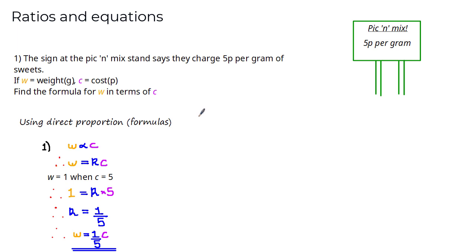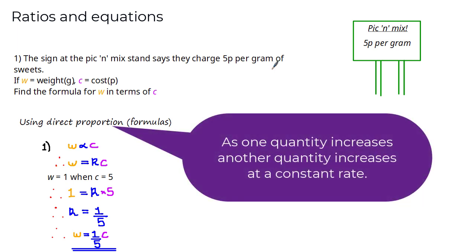We weren't actually told that w and c were directly proportional, but in this case it was correct to assume it. This is because 1 gram costs 5p, so 2 grams would cost 10p and 3 grams would cost 15p. The cost and weight are directly proportional — as one quantity increases, the other increases at a constant rate.